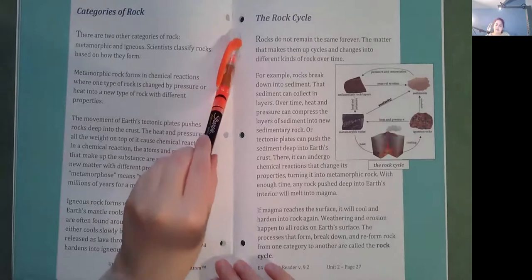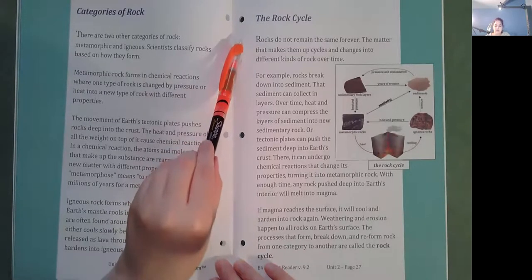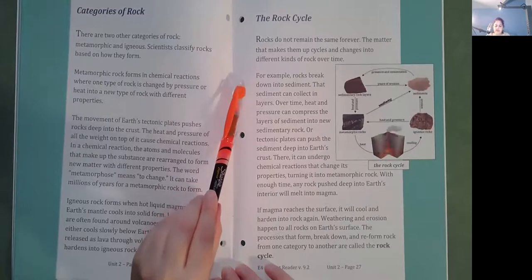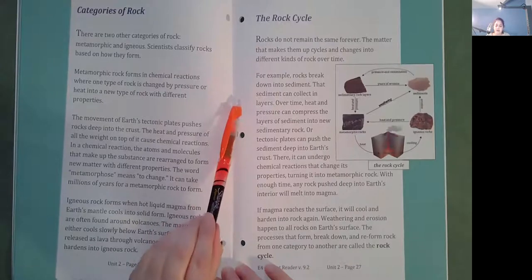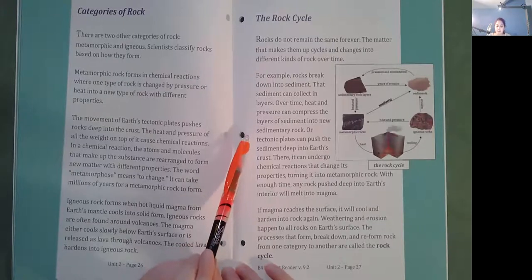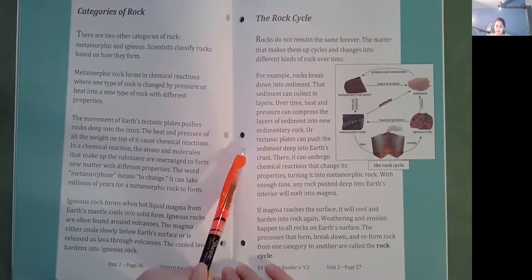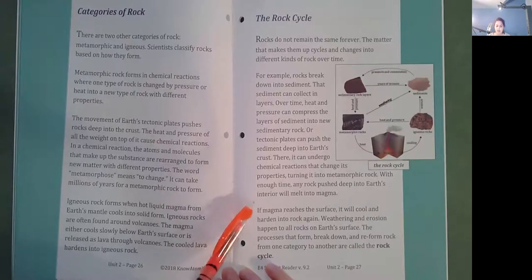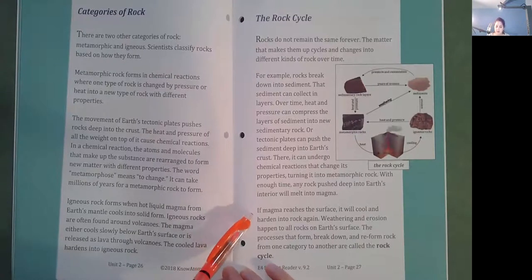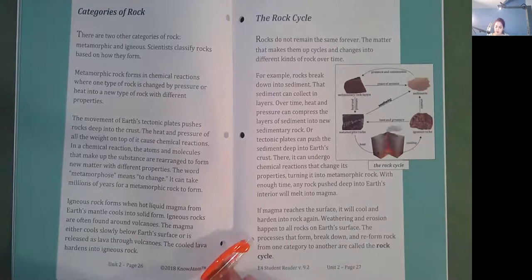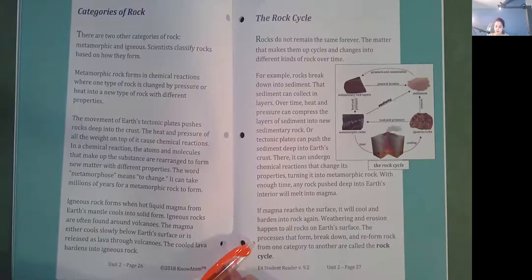The rock cycle. Rocks do not remain the same forever. The matter that makes them up cycles and changes into different kinds of rocks over time. For example, rocks break down into sediment. That sediment can collect in layers. Over time, heat and pressure can compress the layers of sediment into new sedimentary rock. Or, tectonic plates can push the sediment deep into Earth's crust. There, it can undergo chemical reaction that changes properties, turning it into metamorphic rock. With enough time, any rock pushed deep into Earth's interior will melt into magma. If magma reaches the surface, it will cool and harden into rock again. Weathering and erosion happen to all rocks on Earth's surface. The processes that form, break down, and reform rock from one category to another are called the rock cycle.